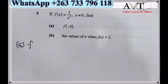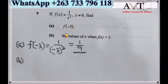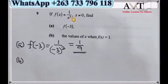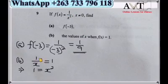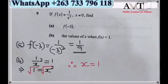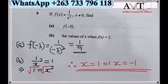Number 9: f(x) equals 1 over x squared. For f(minus 3), replace x with minus 3: 1 over (minus 3) squared equals 1 over 9. For part B, find values of x when f(x) equals 1: set 1 over x squared equals 1, multiply both sides by x squared to get x squared equals 1, then take the square root giving x equals plus or minus 1.